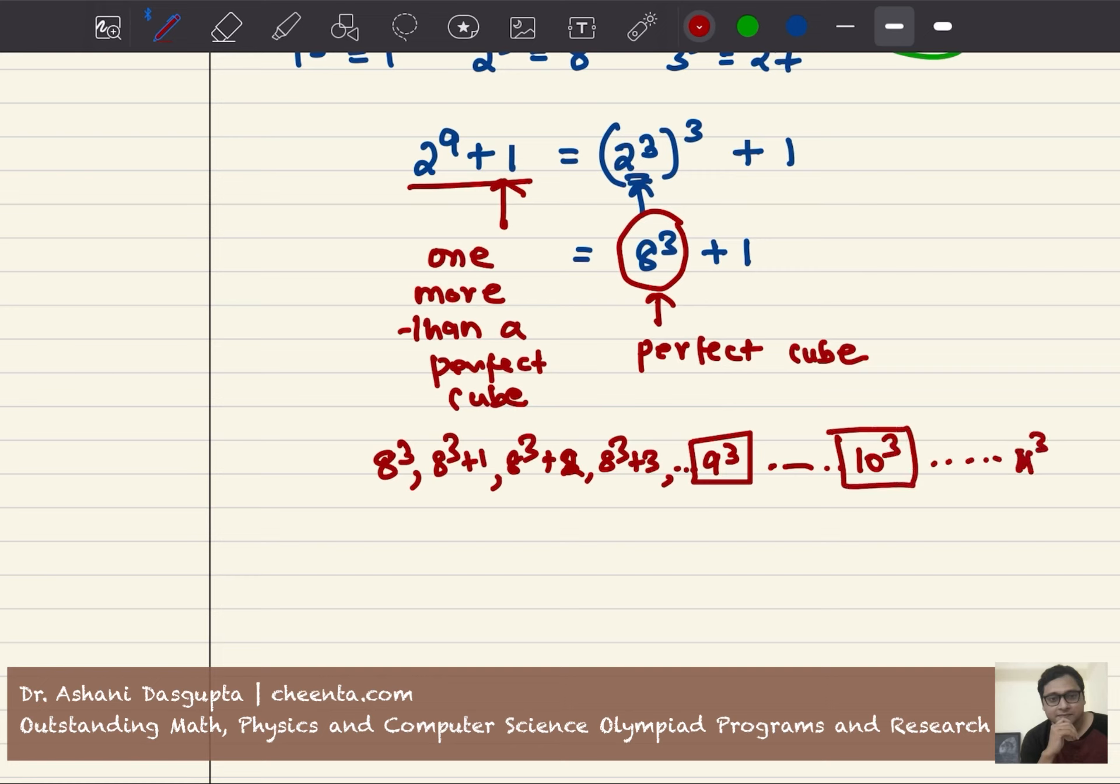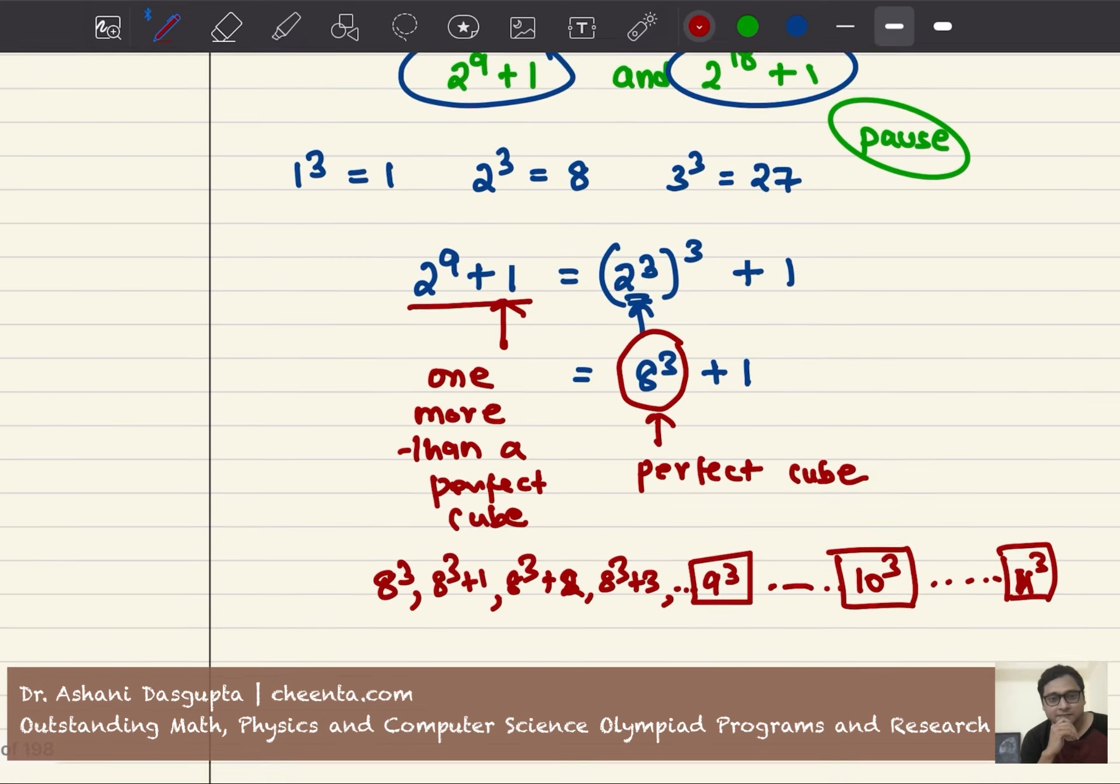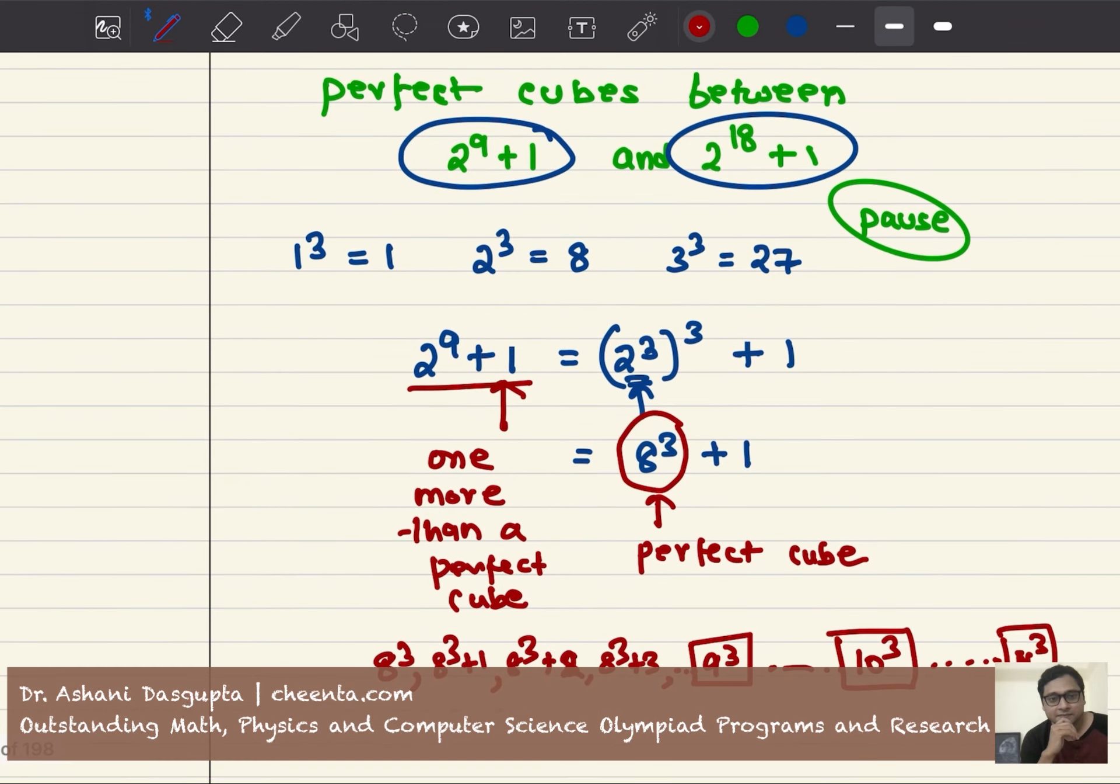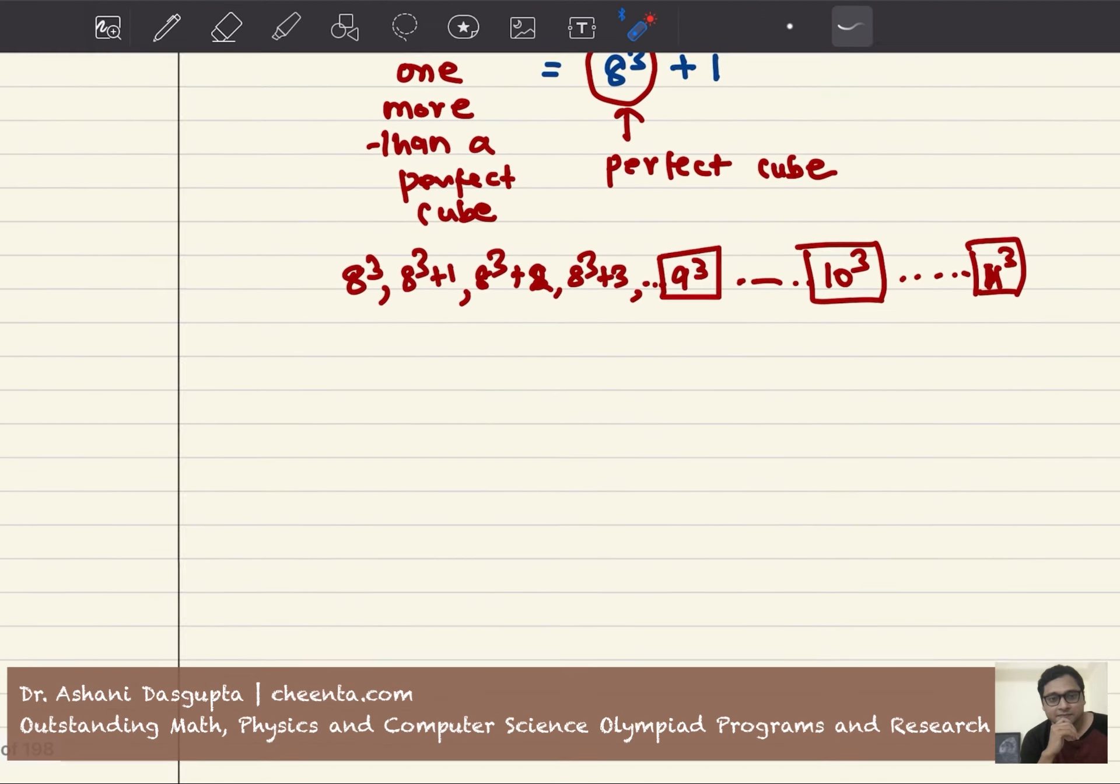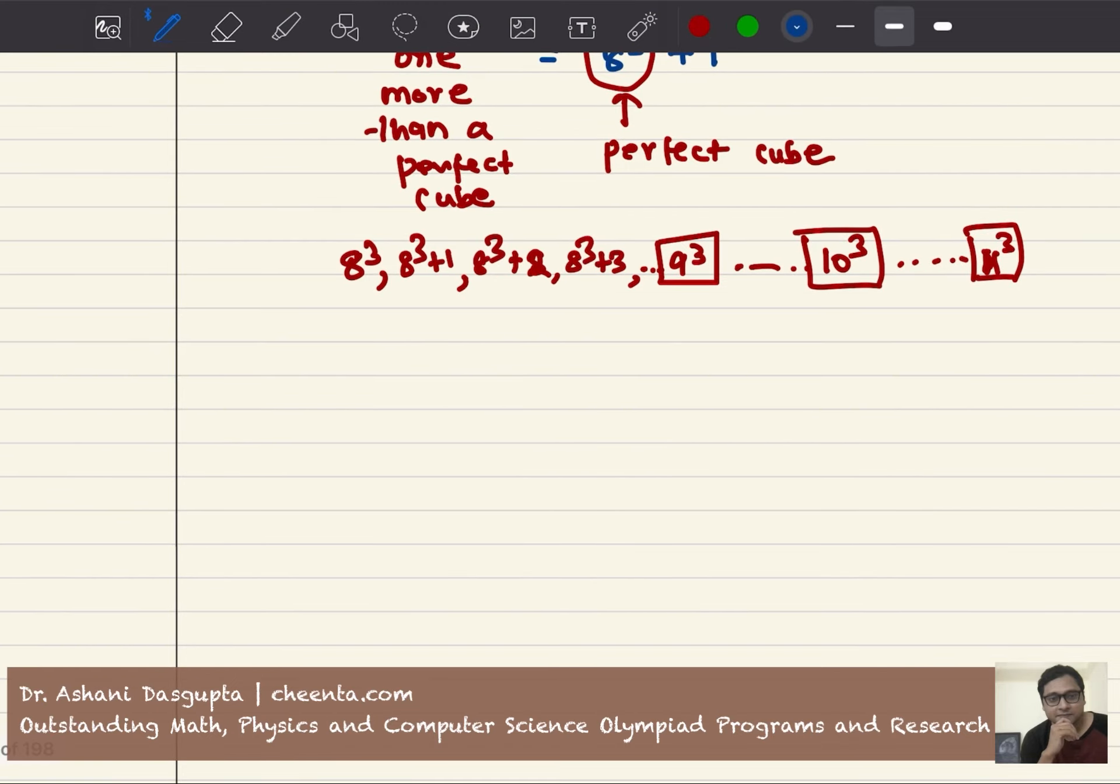The question is how far can we go? Let's look at the final number, 2 to the power 18 plus 1. So 2 raised to 18 plus 1, this is 2 raised to 6 raised to 3 plus 1. So this is 64 raised to the power 3 plus 1.